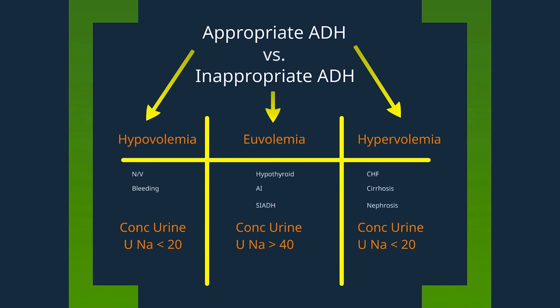So in summary: if the patient has a concentrated urine, the next step is to check the urine sodium. If it's low, it suggests intravascular volume depletion. If it's high, it suggests euvolemic hyponatremia. One last take-home point: to define the patient as having SIADH, one must rule out hypothyroidism and adrenal insufficiency.